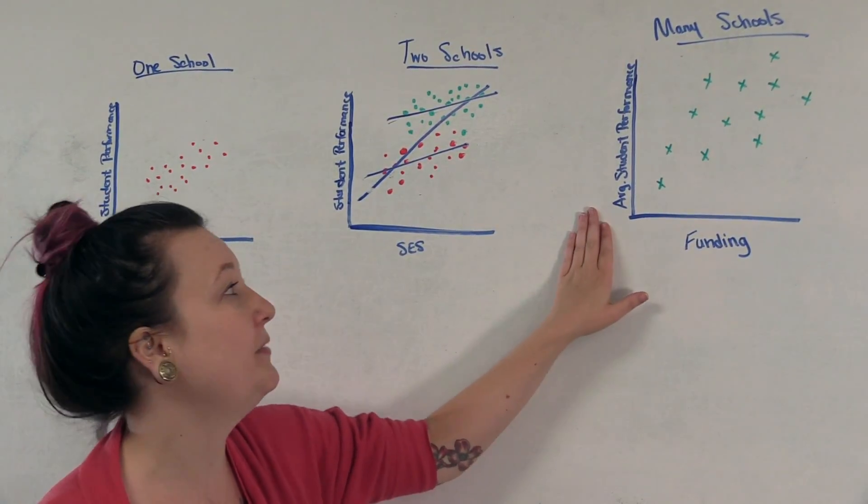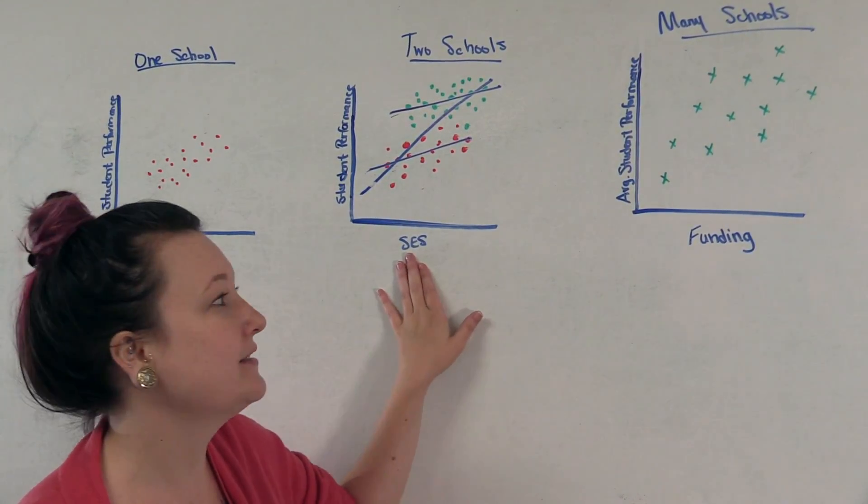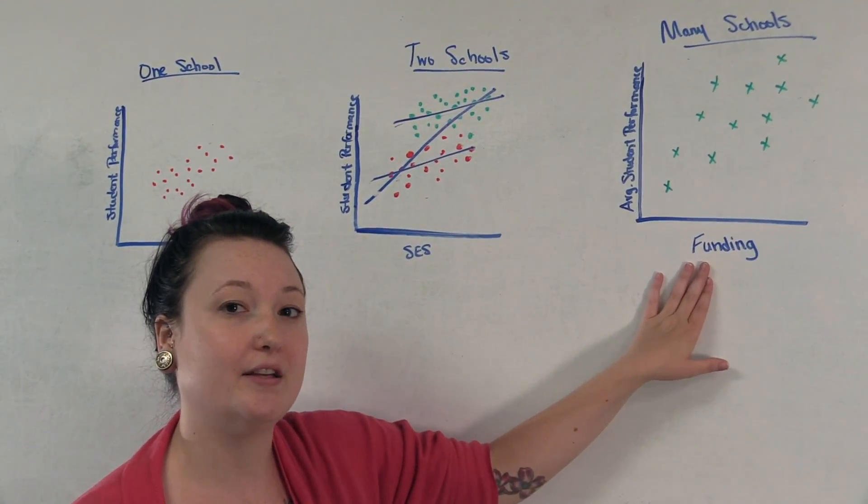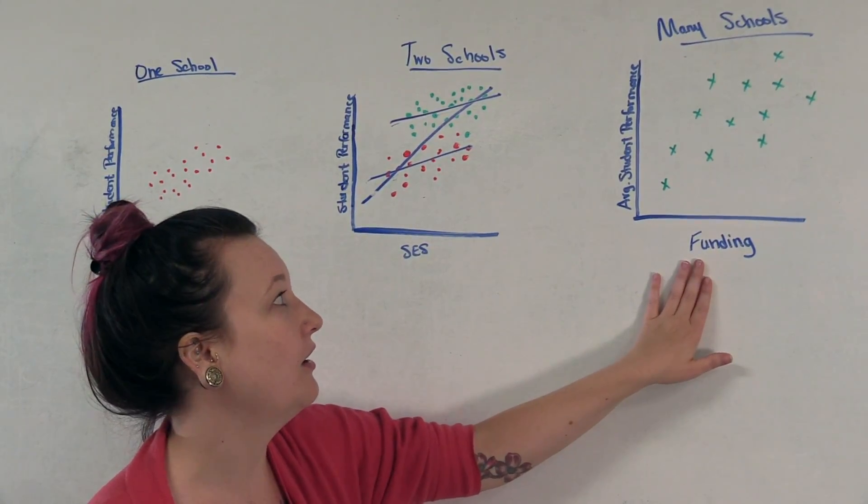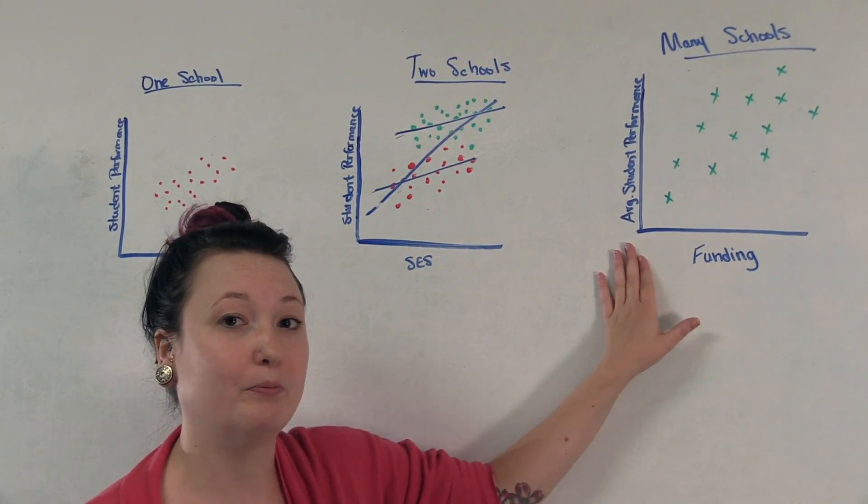We may, however, be interested in both of these relationships. The effect of student level SES, as well as school level funding on student outcomes and performance. We can do this through a simple multi-level model.